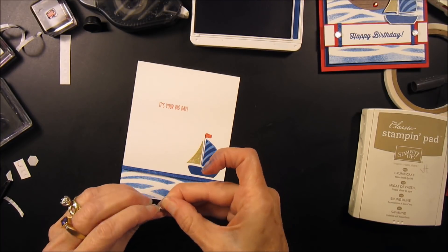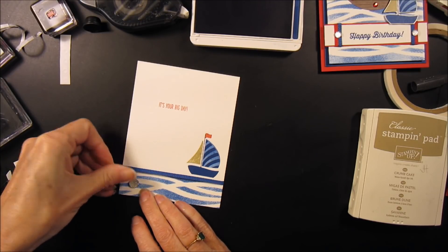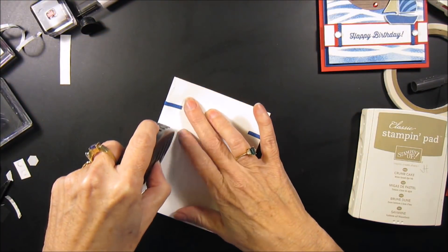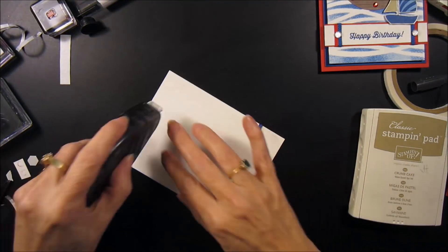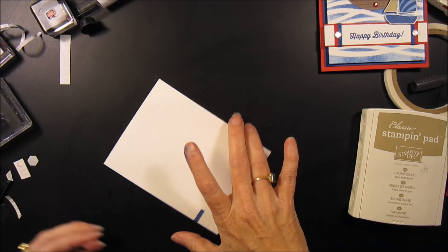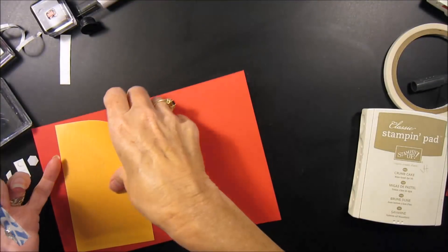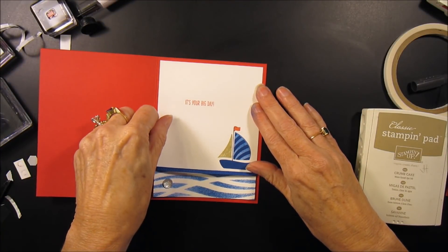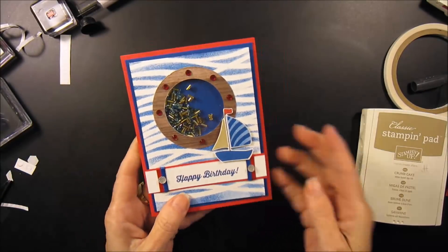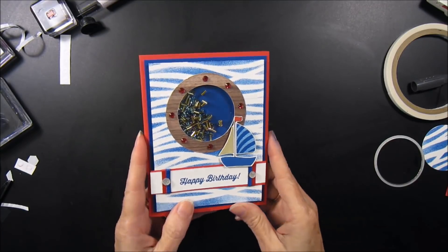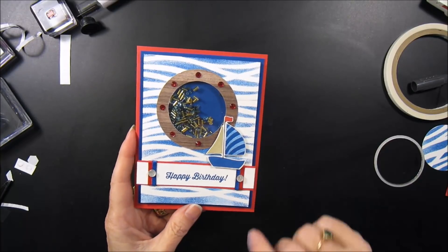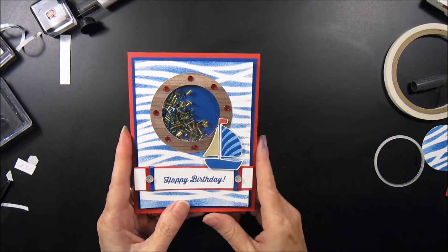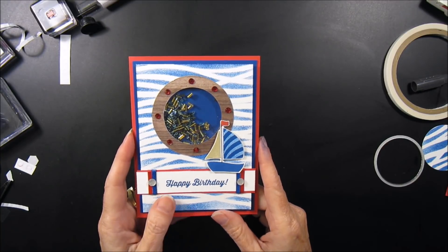And then finally, the large faceted gem goes down here in the corner. And this can be attached to the inside of your card. And there is your swirly bird boat card using the masking technique. I hope you enjoyed that. And I hope you come back and check out next week's Tipin' On Tuesday, or visit my blog at inkingitupwithkathy.com. Have a great week.